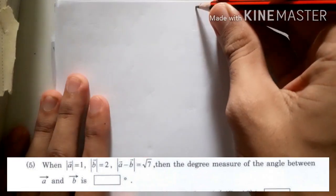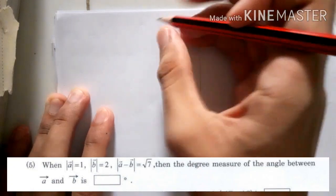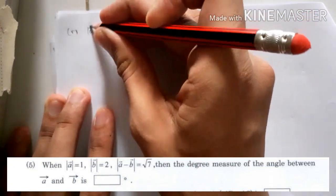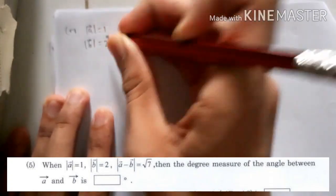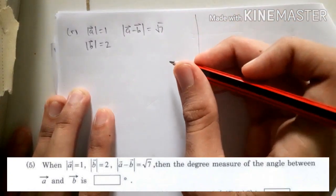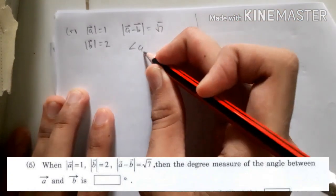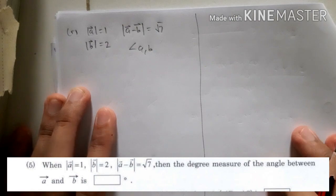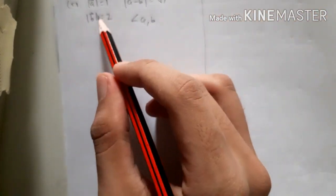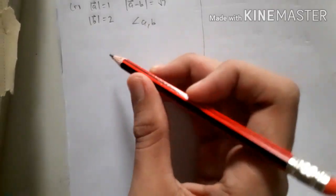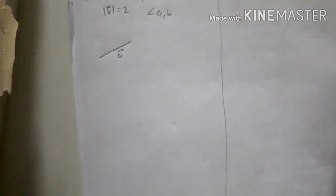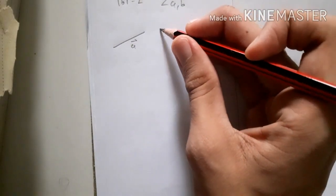Number 5 involves vectors. Given that the magnitude of vector a is 1, the magnitude of vector b is 2, and the magnitude of vector a minus vector b is root 7, find the angle between a and b. We can picture vectors a and b as two connecting lines forming an angle between them.